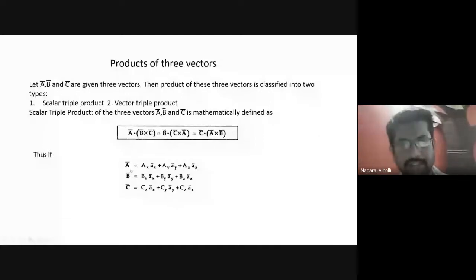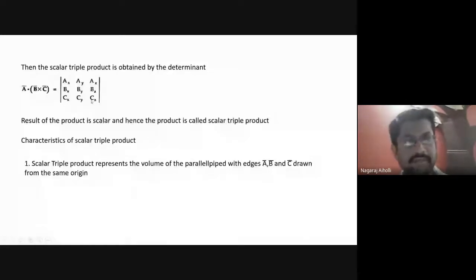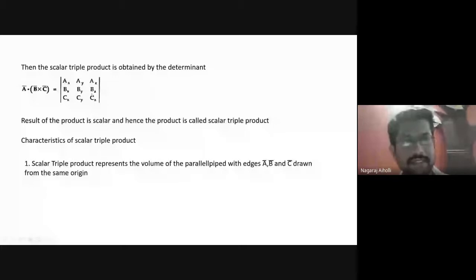The scalar triple product can be expressed in determinant form. That is, a bar dot of (b bar cross c bar) is expressed by the determinant: [ax, ay, az; bx, by, bz; cx, cy, cz]. It is called the scalar triple product because the answer or result is a scalar value — it is a magnitude — and hence the triple product is called the scalar triple product.